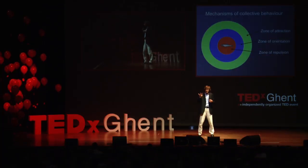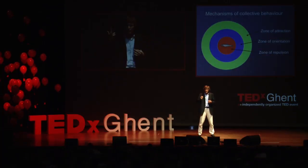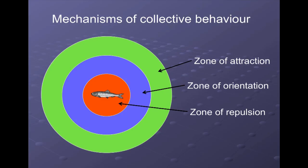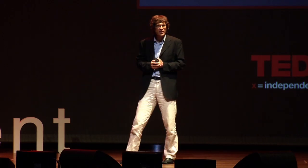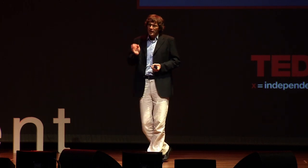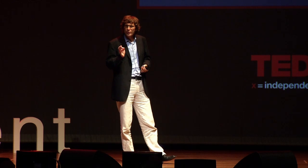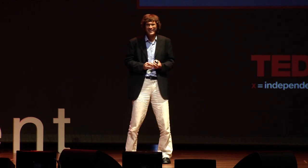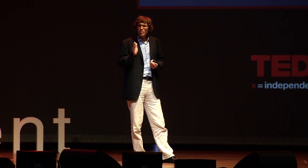So here we see in summary again these three types of interaction. The zone of repulsion is actually beautifully demonstrated by many of you. Everybody keeps a bit of space — I don't actually see many people touching at the moment. Another important component of collective behavior is self-organization.